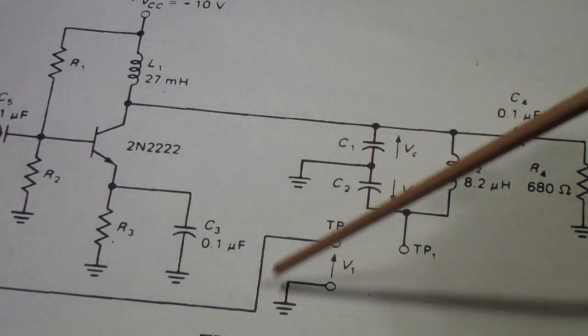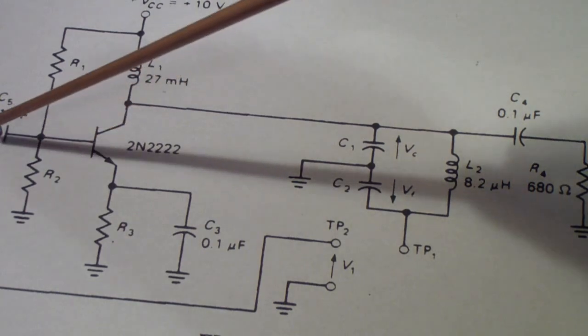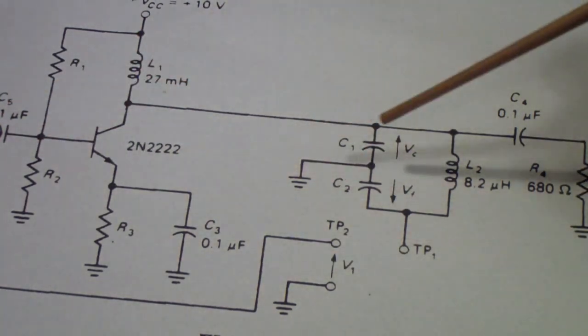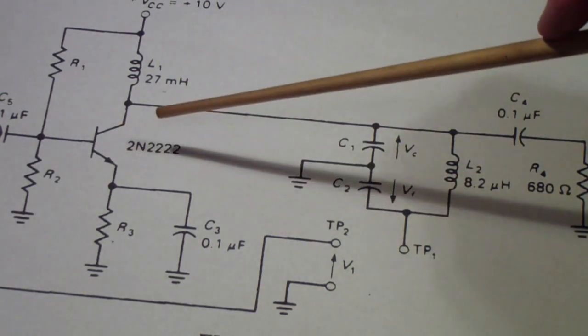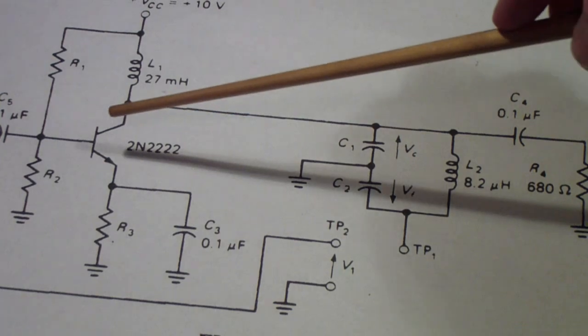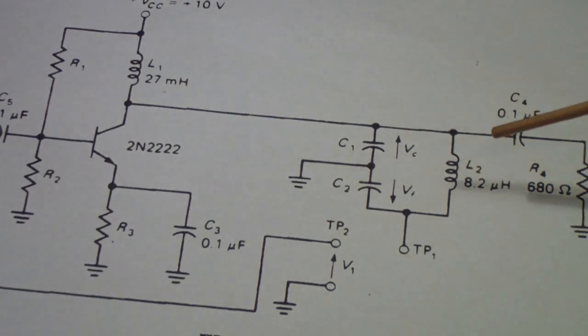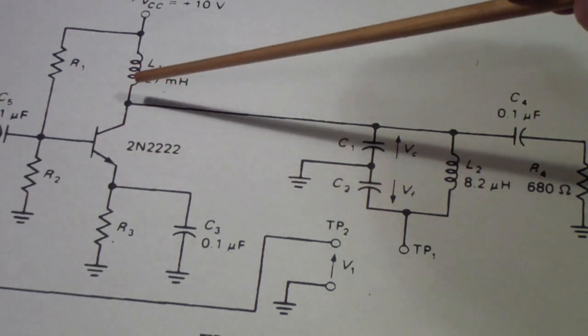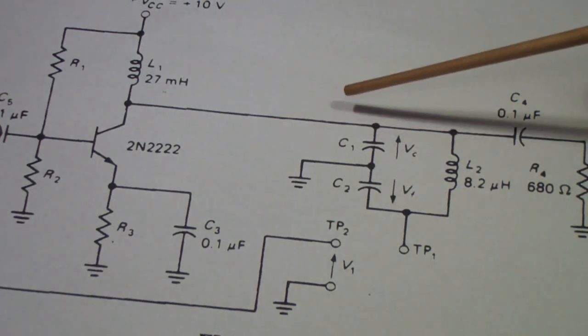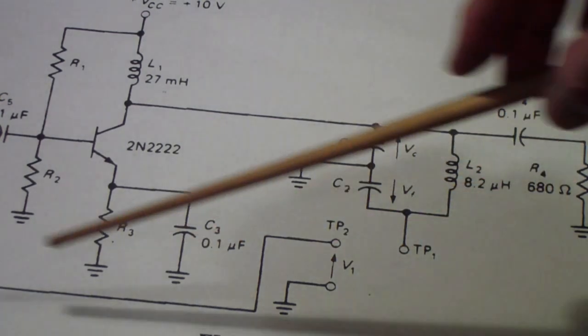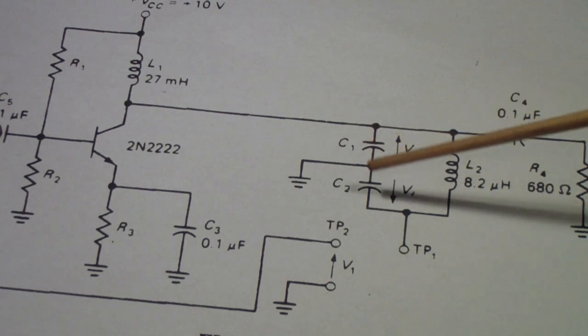What will happen is the stage will gradually build up oscillations until it can no longer increase, and the transistor either hits the point where it's being cut off during one cycle or part of the cycle, or it is saturating during part of the cycle. At any rate, the gain of the stage will adjust itself so that you maintain oscillation if you have a proper relationship between C1 and C2.